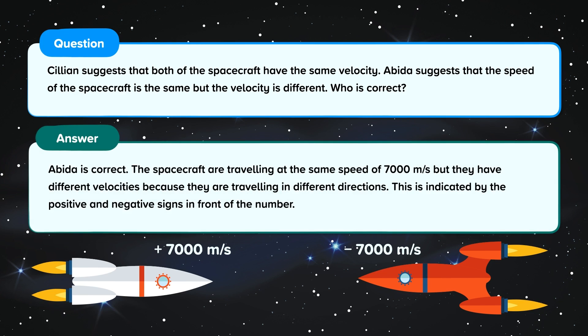Abida is correct. The spacecraft are travelling at the same speed of 7,000 metres per second, but they have different velocities, because they are travelling in different directions. This is indicated by the positive and negative signs in front of the number.